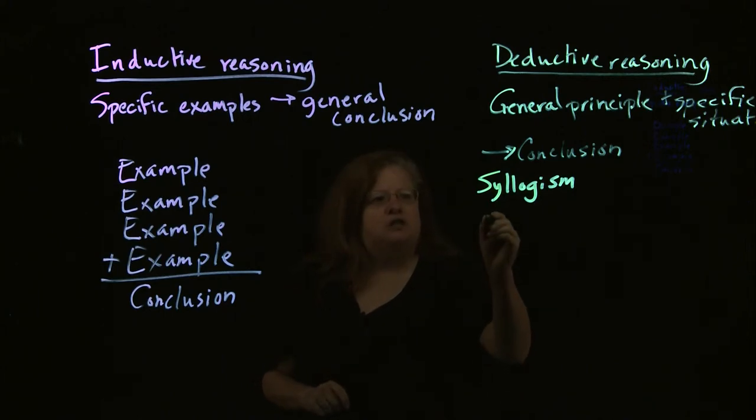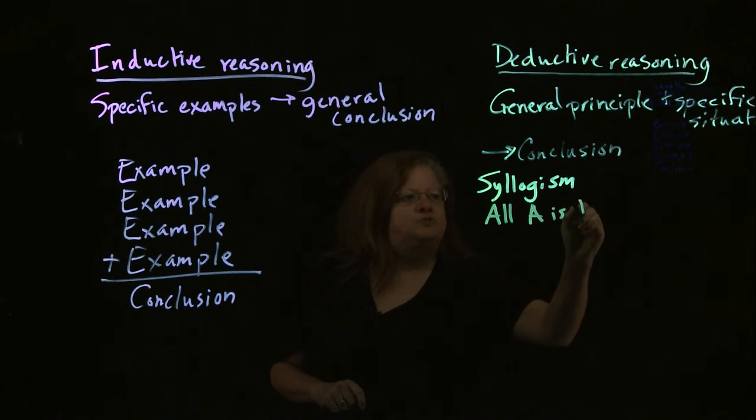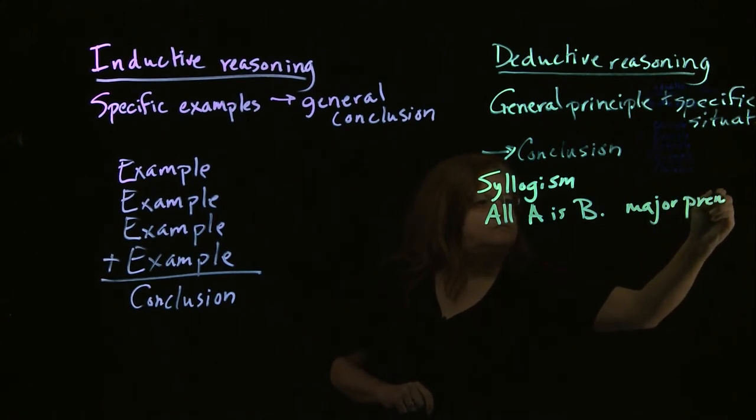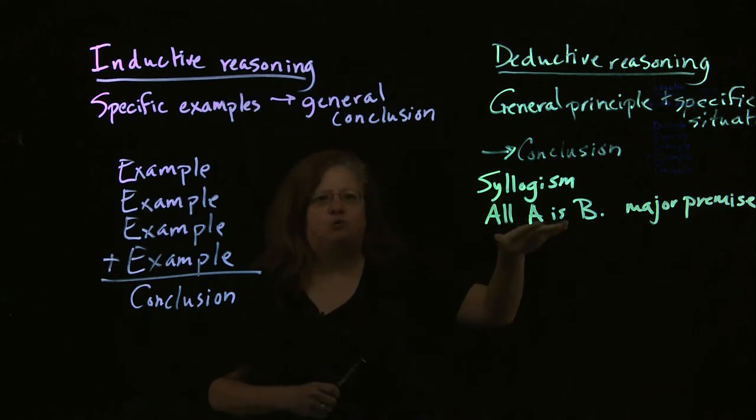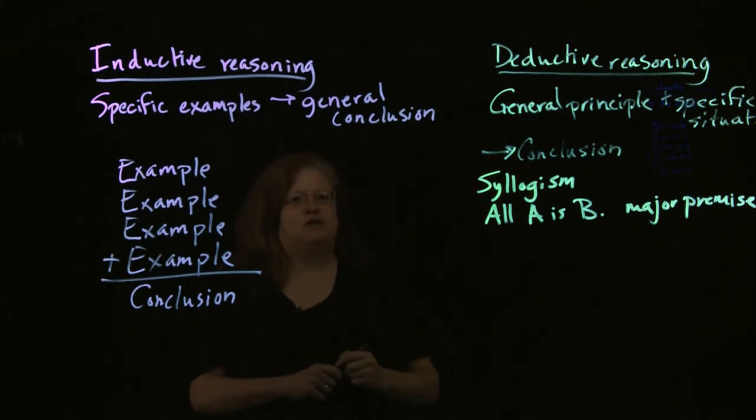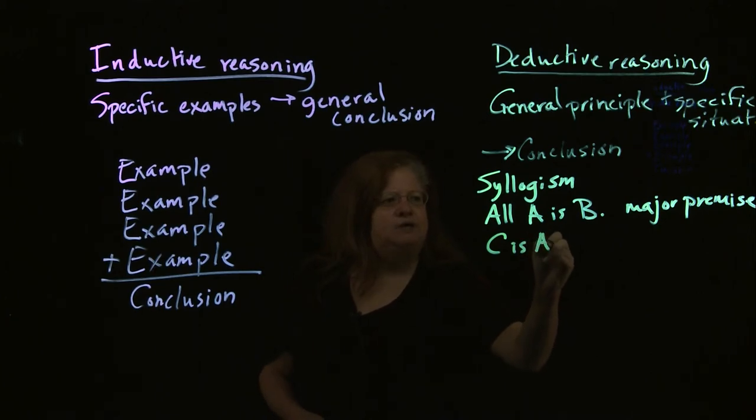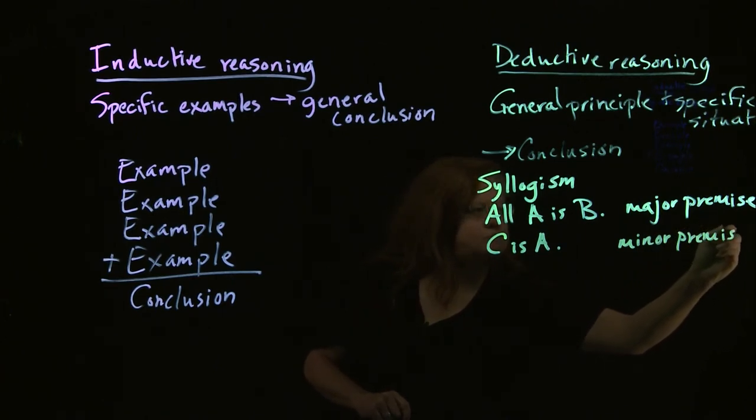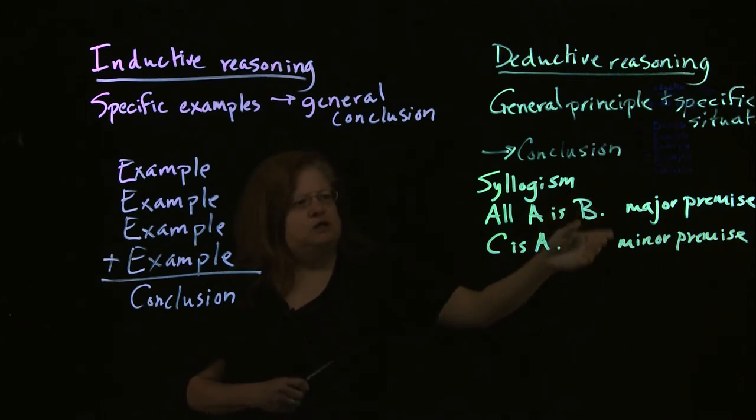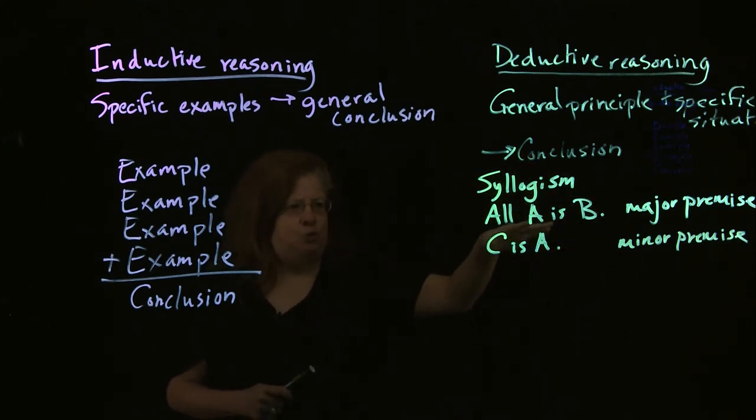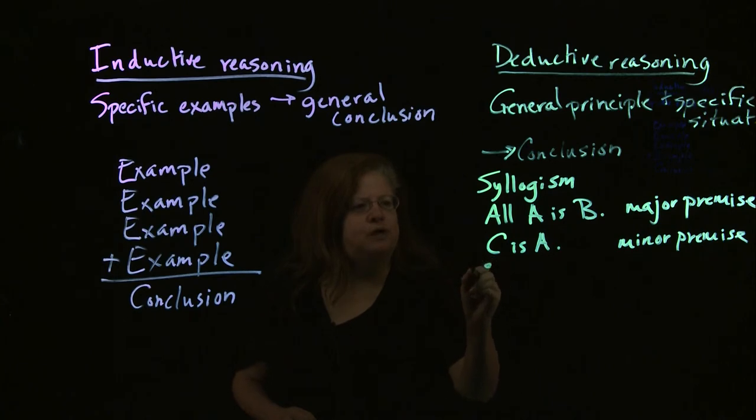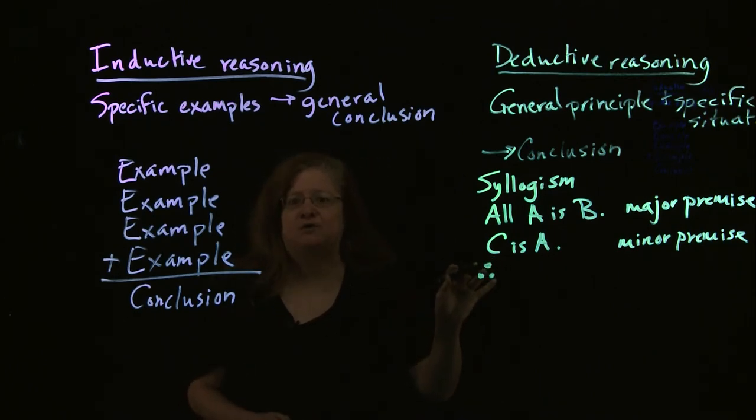The syllogism starts out: all of A is B. This is what's known as our major premise, which is to say this is the general principle that we're starting with. Now, we bring in a specific example, and we say C is A. That is our minor premise, that is our specific situation. So those are the two premises we start with. And then we take these two premises and we add them together. We say therefore, and these three little dots, by the way, that's mathematicalese for therefore. And that's one of the things when you're looking for deductive reasoning.